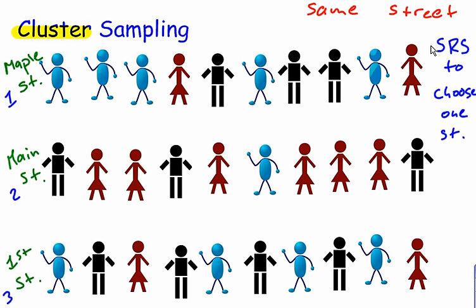And then I use SRS once again to randomly choose a number between one and three. And it just so happens that the number that comes up is the number two. So I use SRS and I choose the number two, which means Main Street is the cluster that I'm going to interview.